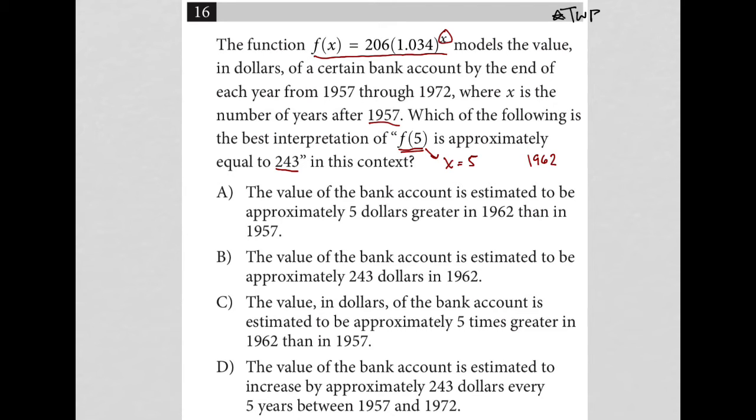And then because it's equal to 243, that tells us that in the year 1962, the bank account has a balance of $243. That's a translation of what we read and what the question is asking for. Let's see what answer choice matches our understanding.